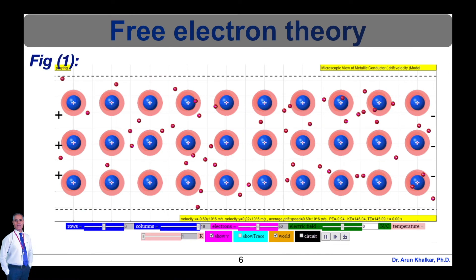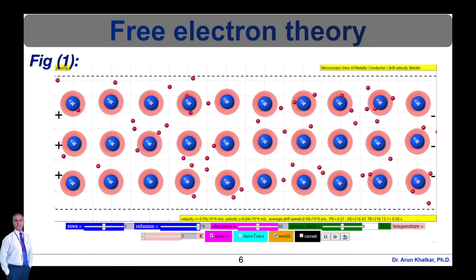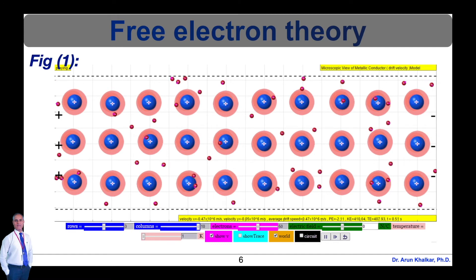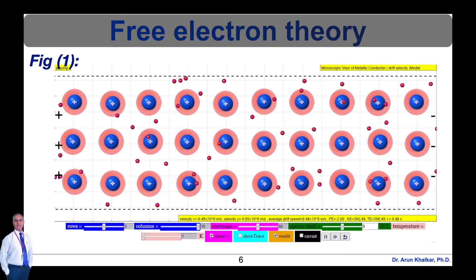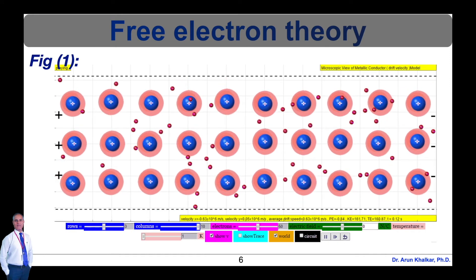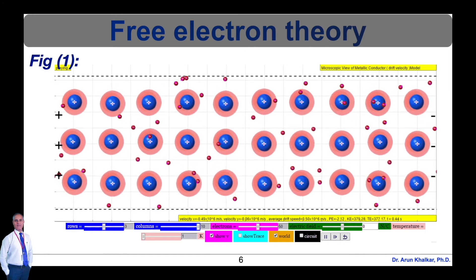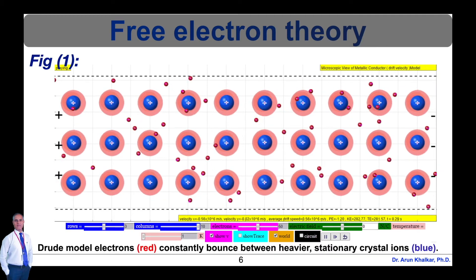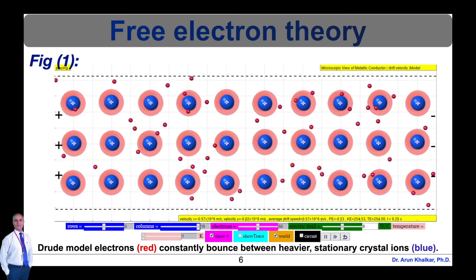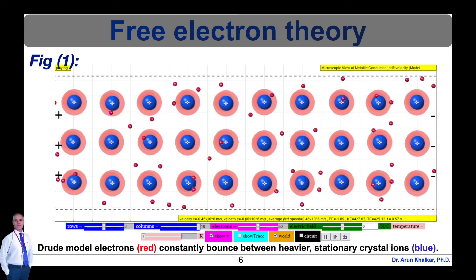According to the quantum free electron theory, the motion of free electrons in metals is shown in this animated figure. As per Drude model, the electrons, shown in red, constantly bounce between heavier stationary crystal ions, shown in blue.